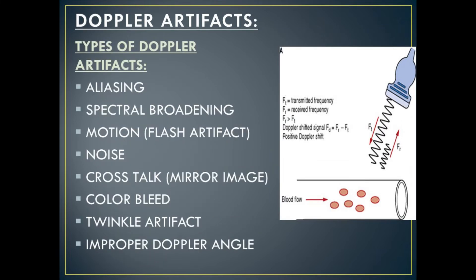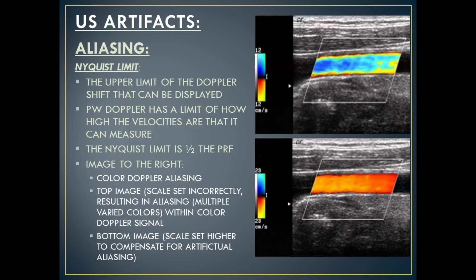Types of Doppler artifacts include aliasing, spectral broadening, motion (also known as flash artifact), noise, crosstalk (also known as mirror image artifact), color bleed, twinkle artifact, and improper Doppler angle.